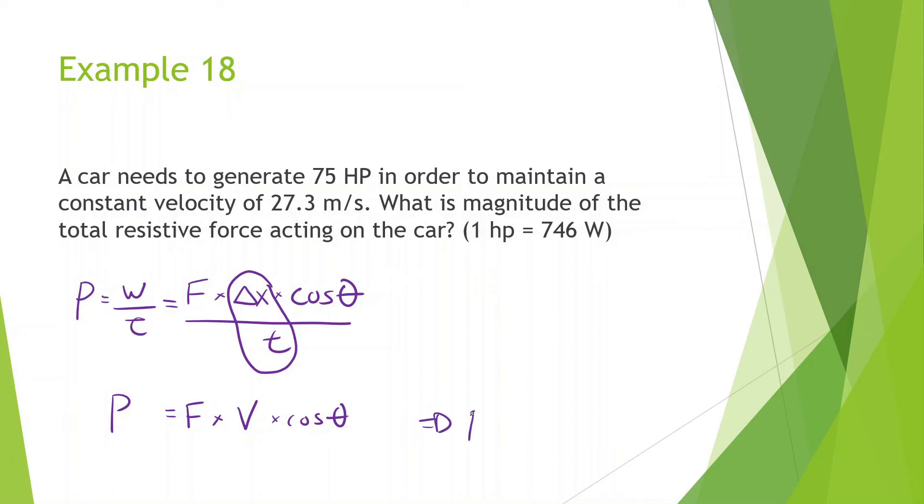So we can say that the power is equal to the force. Oh, we know what the power is, 75 horsepower. So I'm going to just do 75 times 746 to find what it is in watts. And we get 55,950 watts is equal to the force times the velocity, which is 27.3.